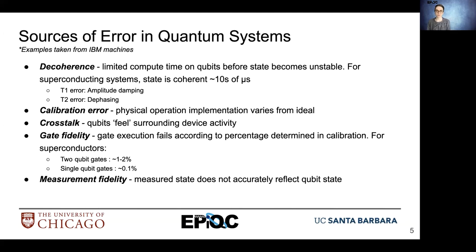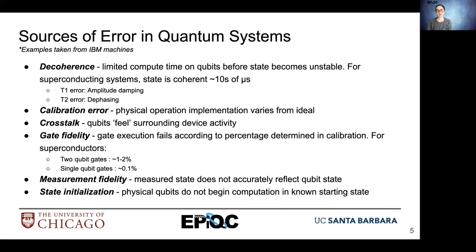There's also measurement fidelity, where we assess how accurately our measurement operations reflect the actual state of our qubits. Finally, we have state initialization. We need to make sure that our qubits start in an initial state that we know before we process them. With state initialization error, qubits start up in an unknown starting state.